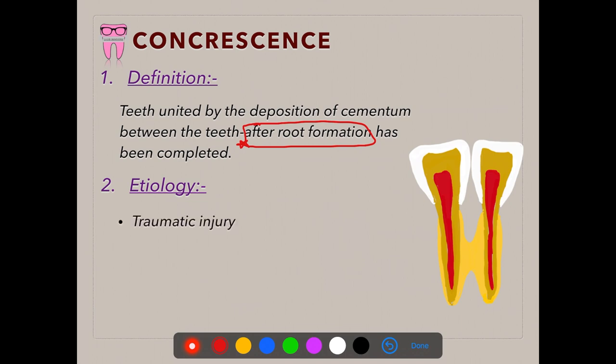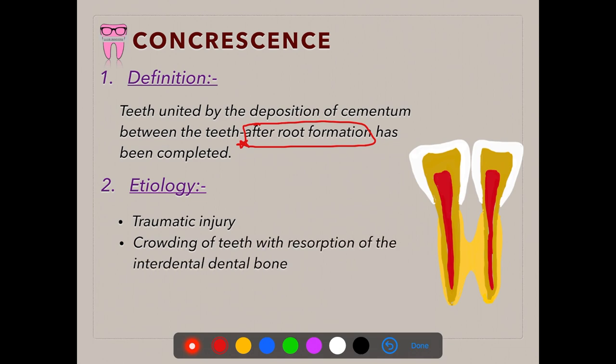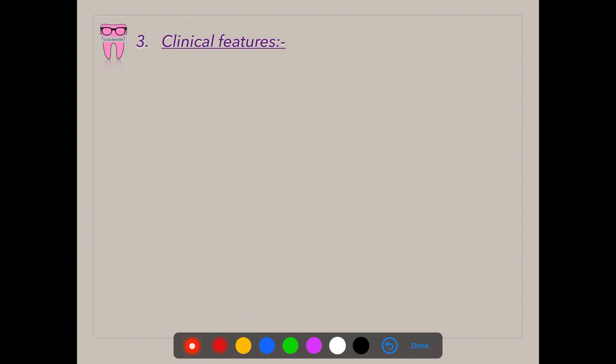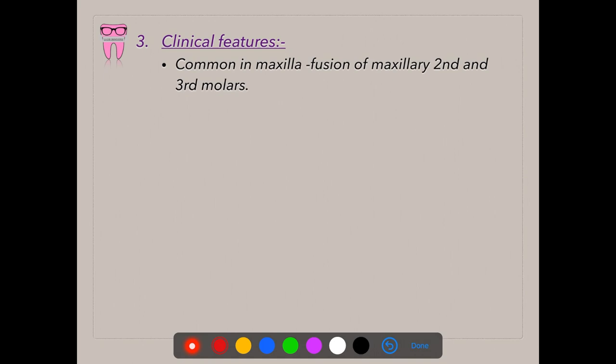The etiology of concrescence is traumatic injury and crowding of teeth with resorption of interdental bone. It is common in the maxilla, resulting in fusion of maxillary second and third molars. Importantly, unlike germination and fusion which affect anterior teeth more than posteriors, concrescence affects posteriors — specifically maxillary posteriors.